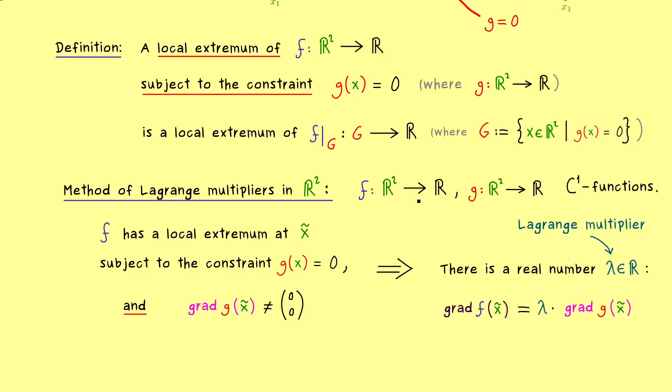So you can remember, in order to find local extrema under a constraint, we have to satisfy this equation here. So the question is, can we find points x tilde and numbers lambda, such that the equation is satisfied. And if we can, then the points x tilde we find are the only points where we could have a local extremum. So still, as before, it's not a sufficient criterion.